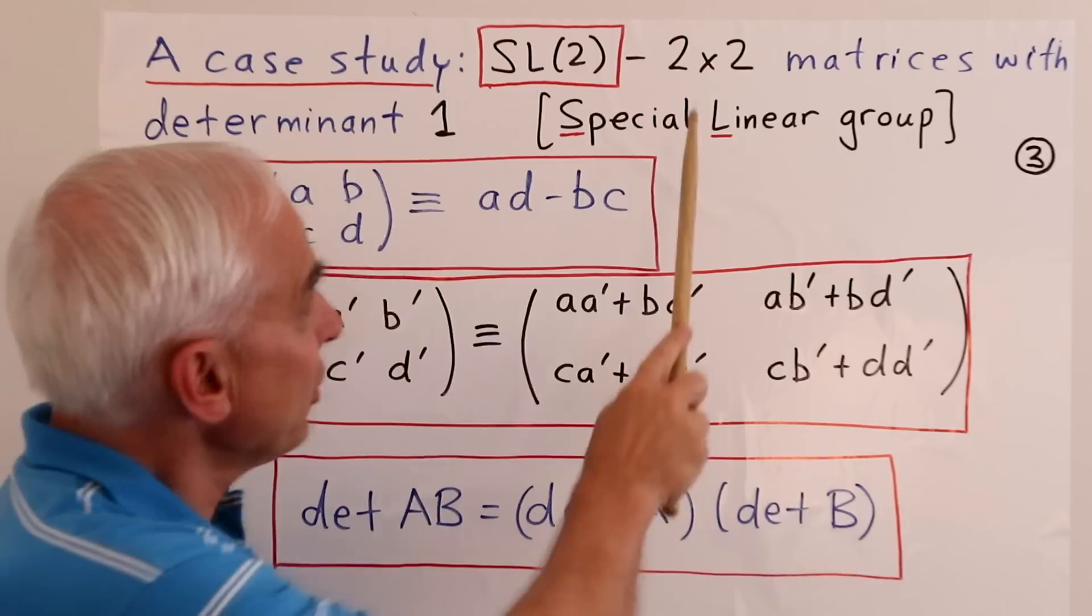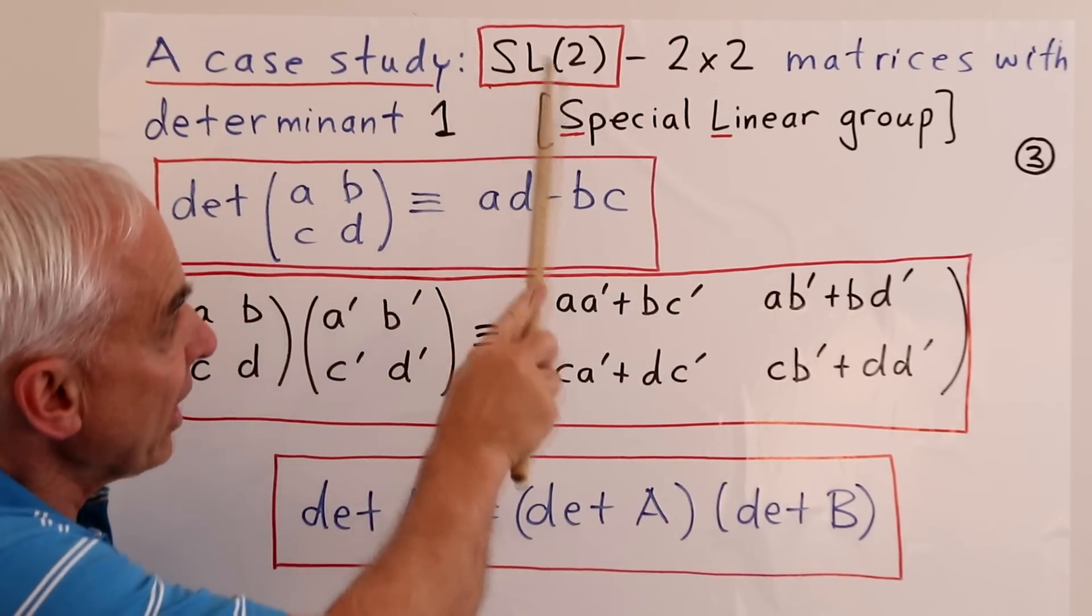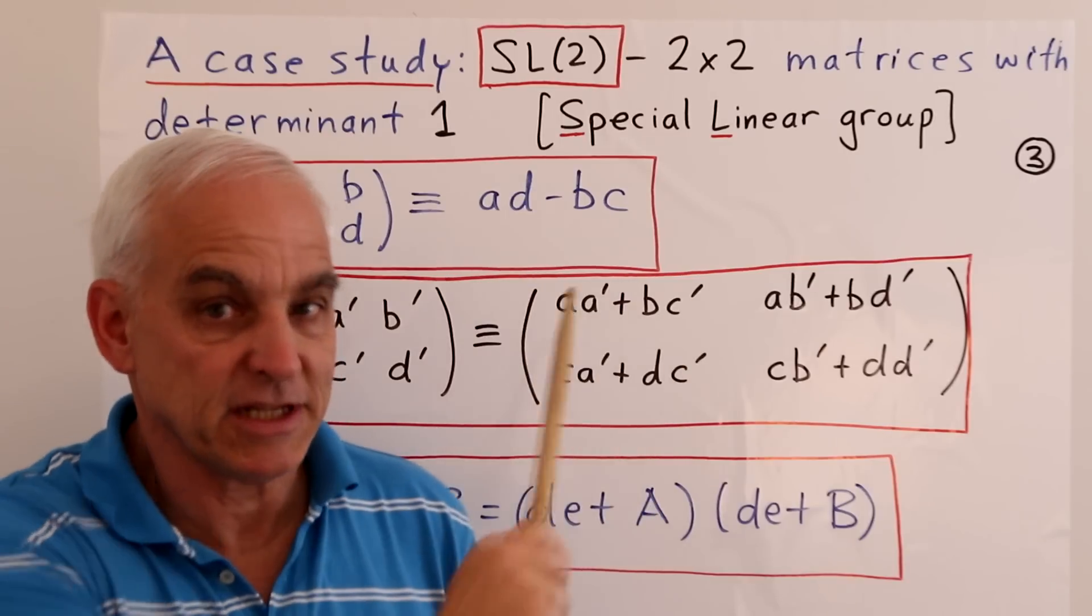That's the context of two by two matrices with determinant one. The SL stands for special linear. So this is the special linear group.